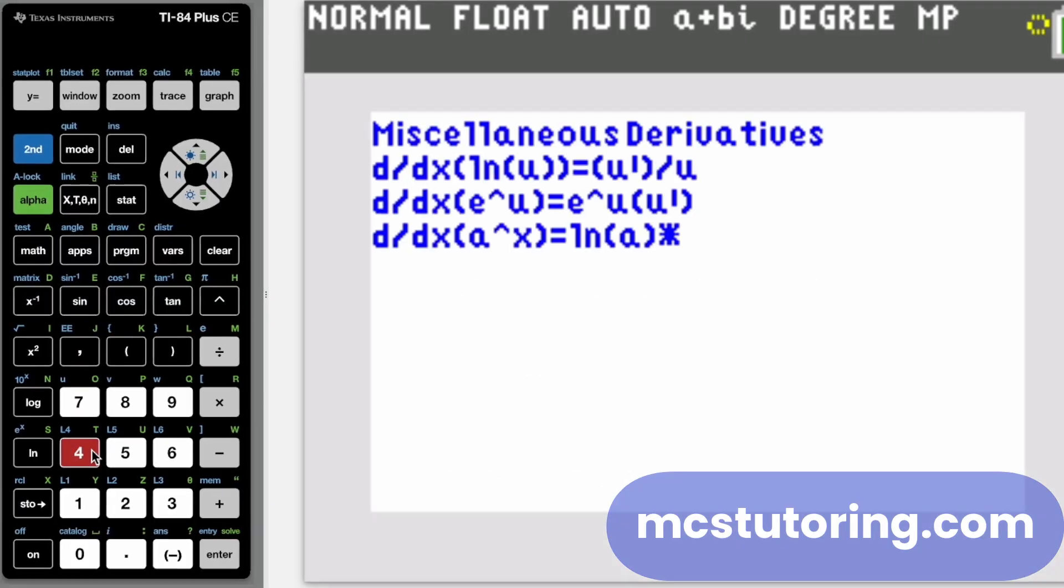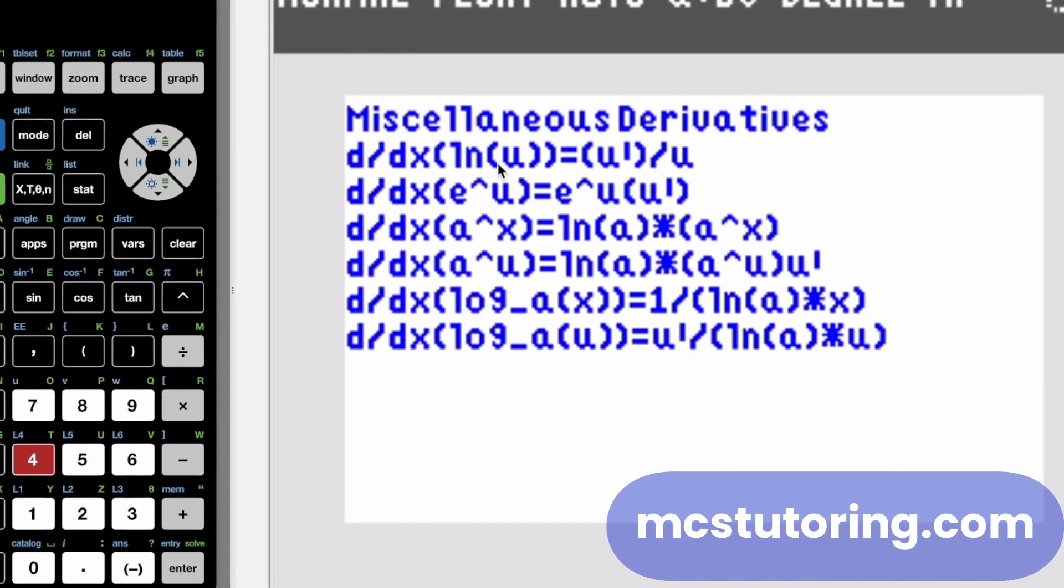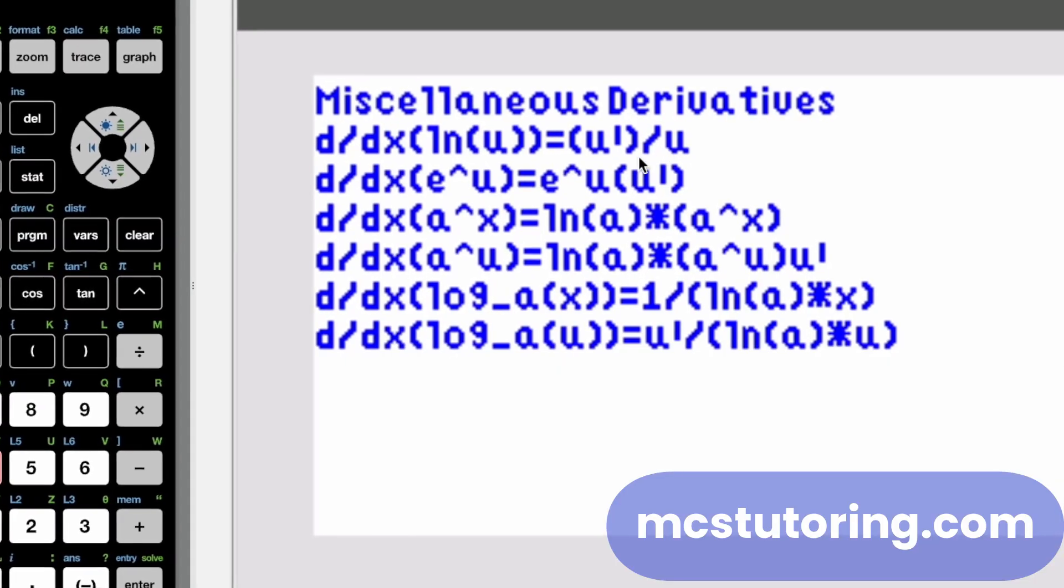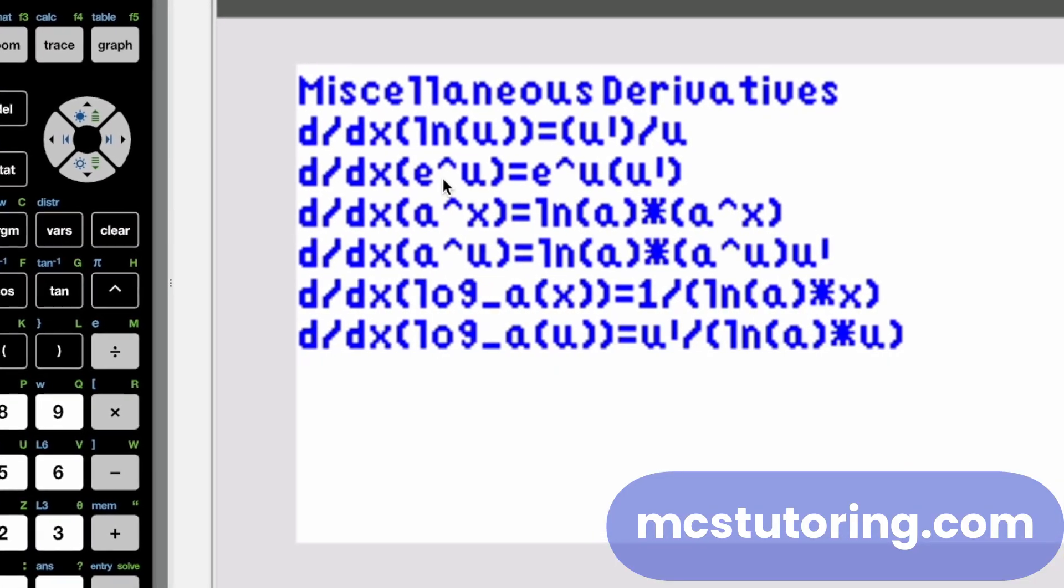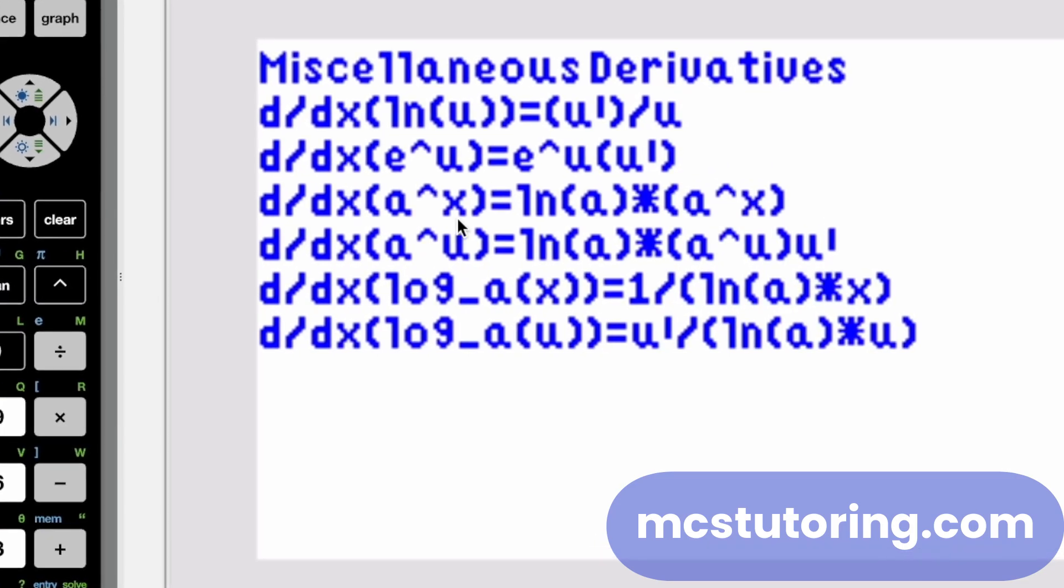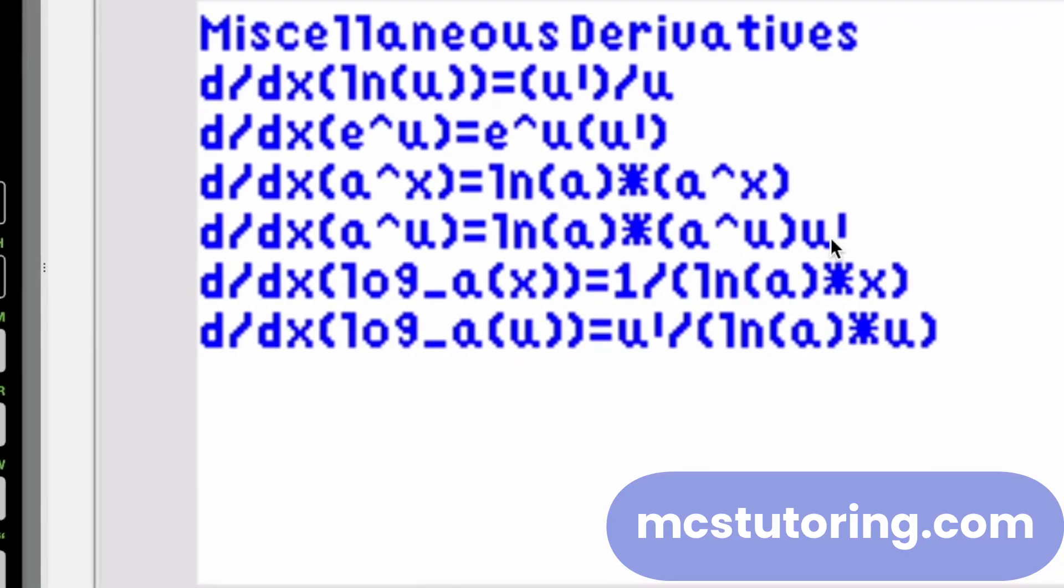So miscellaneous derivatives. These have shown up on students' finals. So that's why I'm including them. Derivative of ln U is U prime over U. You probably already know derivative of e to the U is eU times U prime. The big thing is this A to the U.